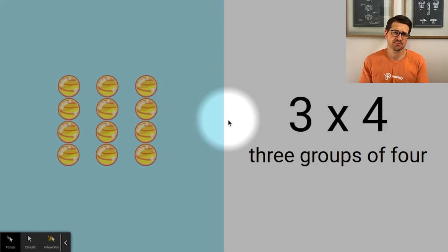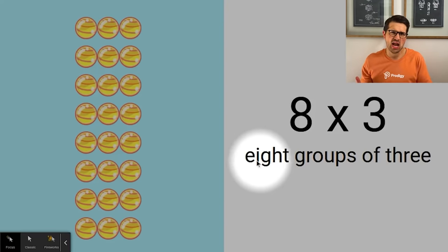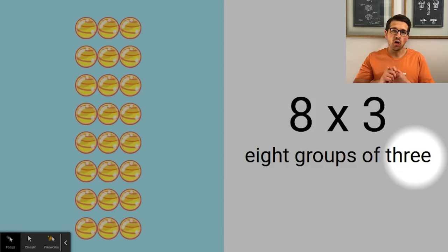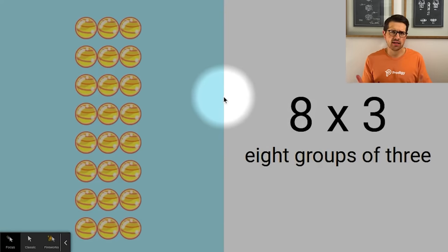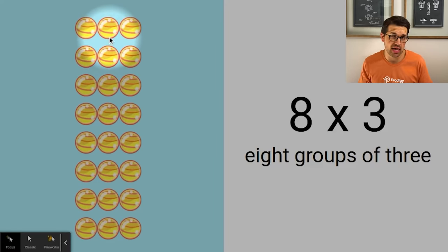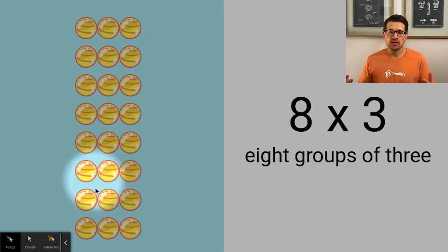Multiplying by eight means you have eight groups of something or eight in a group. Why jump from four to eight? Because two times two is four, and multiply that by one more two and you get eight. So for twos we double once, for fours we double twice, for eights we double three times. Make eight times three with your objects. Double three once: three plus three is six. Double again: six plus six is twelve. One more time: twelve plus twelve is twenty-four. Eight times three is twenty-four!